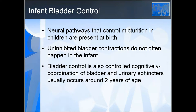In the infant, the neural pathways that control micturition are present at birth. Uninhibited bladder contractions do not often happen — the bladder contracts when it is full. Children are only voiding when their bladder is actually reaching capacity. The coordination of the bladder and urinary sphincters usually occurs around two years of age, which is when we generally potty train, though this differs depending on culture and region.